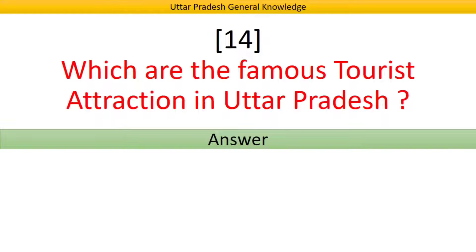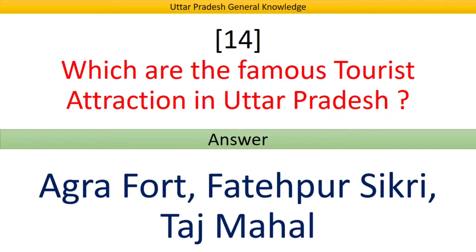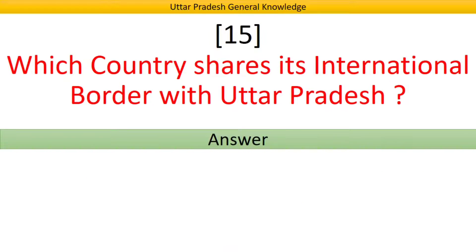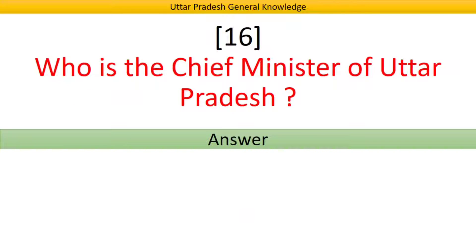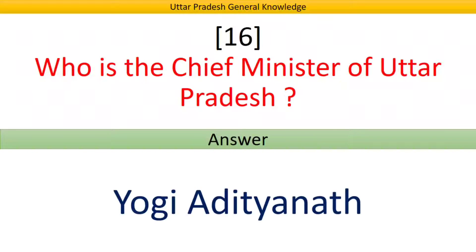Which are the famous tourist attractions in Uttar Pradesh? Answer: Agra Fort, Fatehpur Sikri, and Taj Mahal. Which country shares its international border with Uttar Pradesh? Answer: Nepal. Who is the Chief Minister of Uttar Pradesh? Answer: Yogi Adityanath.